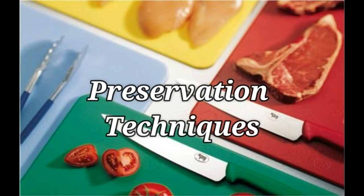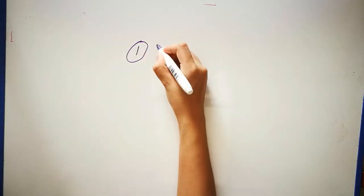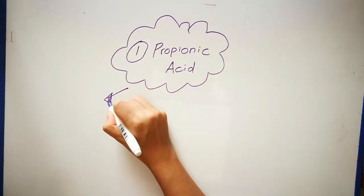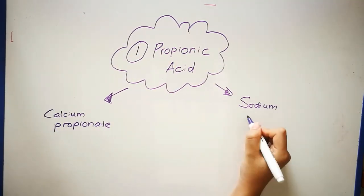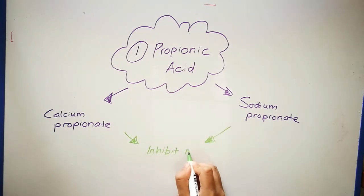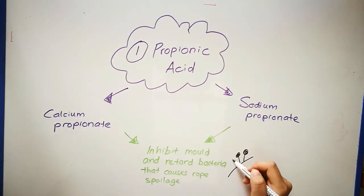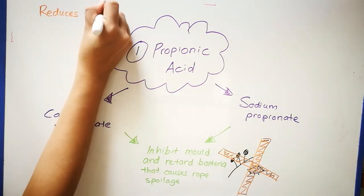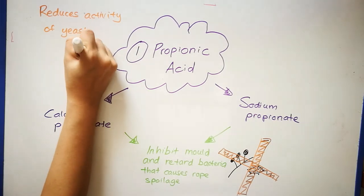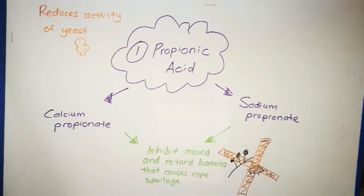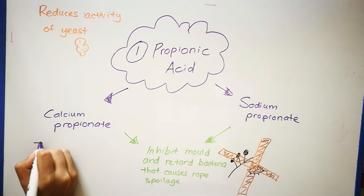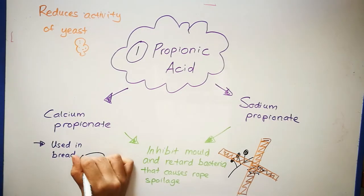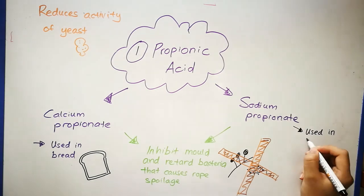Now let us discuss about the several preservation techniques that are commonly used in bakery products. Firstly, we have propionic acids, which are calcium propionate and sodium propionate. Both acids strongly inhibit mold and retard growth of bacteria that causes rope. However, it reduces the activity of yeast in the dough. Hence, a higher yeast level and longer proof time is needed for yeast to produce gas during baking. Calcium propionate is used in bread, while sodium propionate is used in cakes.